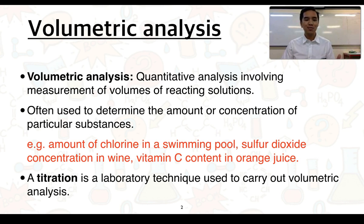For example, we can consider the amount of chlorine in a swimming pool, sulphur dioxide concentration in wine, or even vitamin C content in orange juice. A technique that we use, called a titration, is something we use to carry out volumetric analysis and it's something that you should be familiar with from stage 1 chemistry.